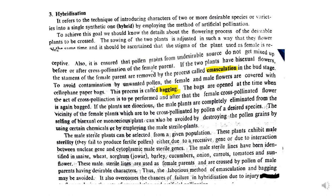To avoid contamination by unwanted pollen, the female and male flowers are covered with cellophane paper bags — a process called bagging. The bags are opened at the time when cross-pollination is to be performed, and then after cross-pollination, bagging is done again.